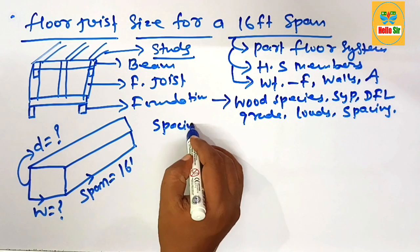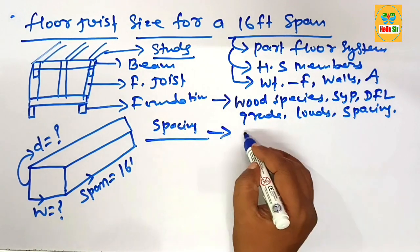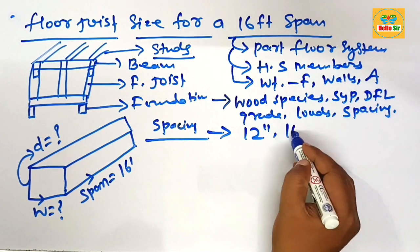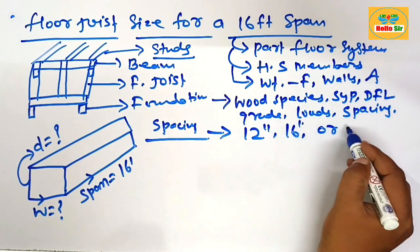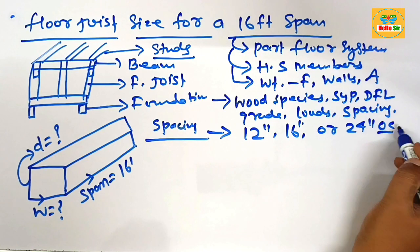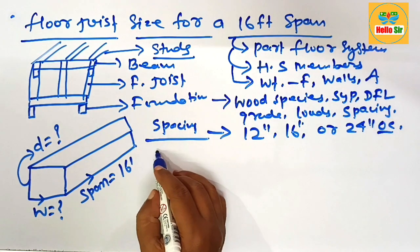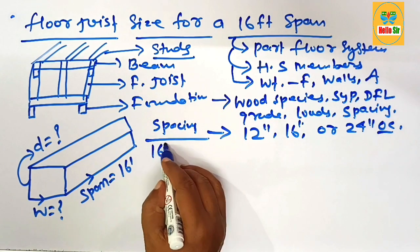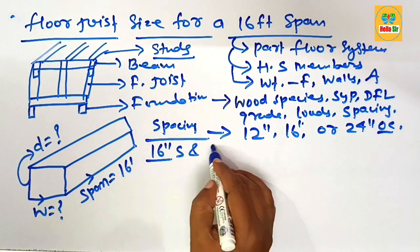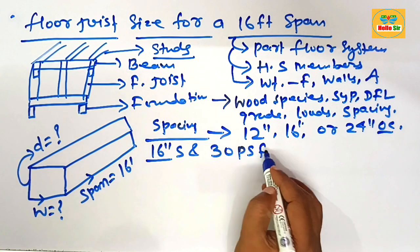The common spacing between floor joists includes 12 inches, 16 inches, or 24 inches on center. This is the common spacing used for floor joists at 16 inches spacing and 30 PSF live load.